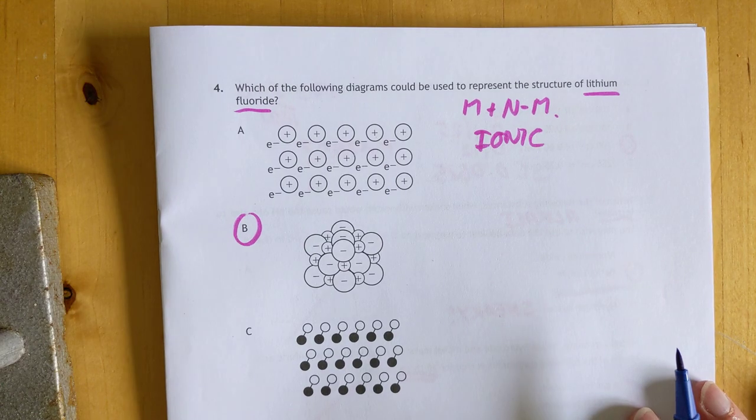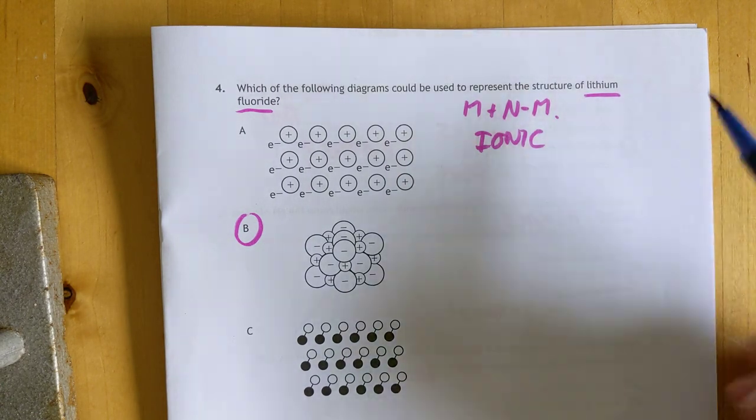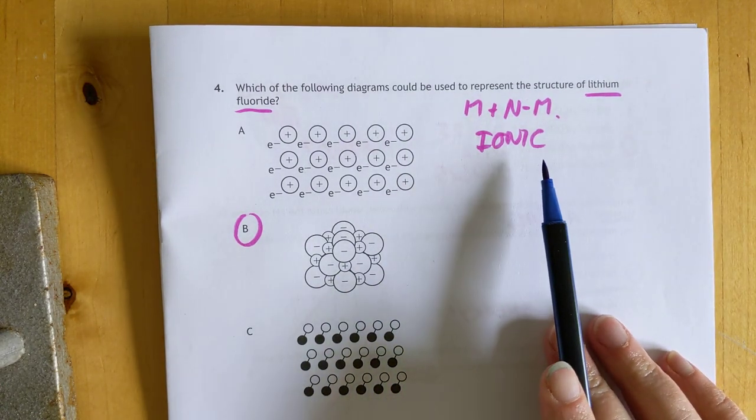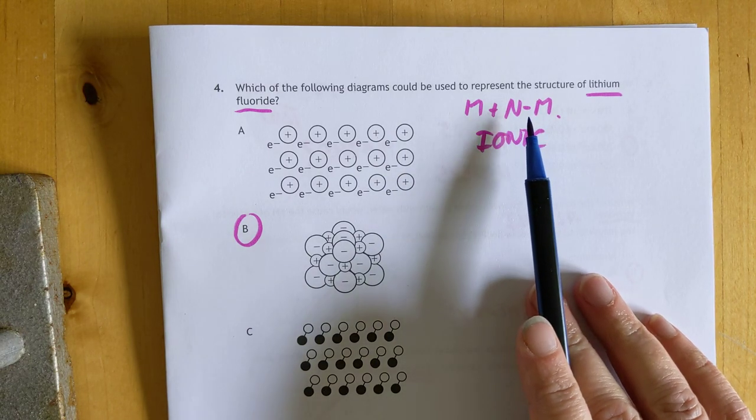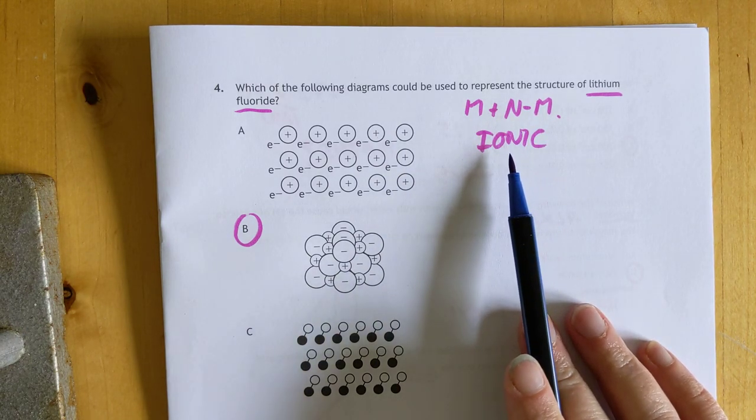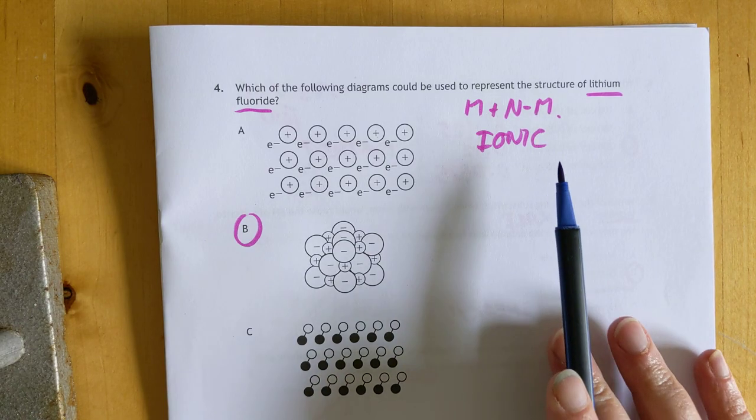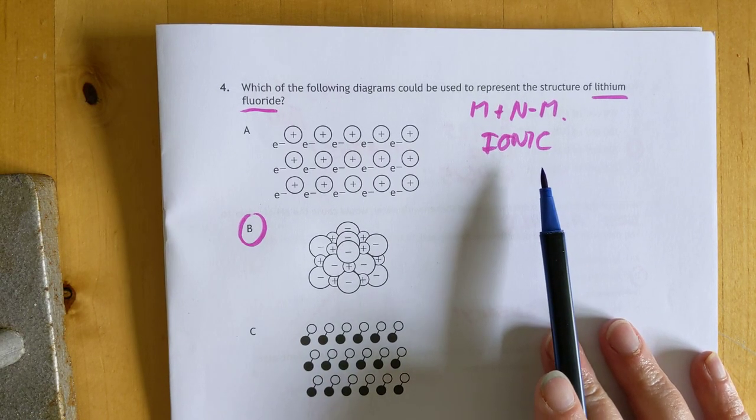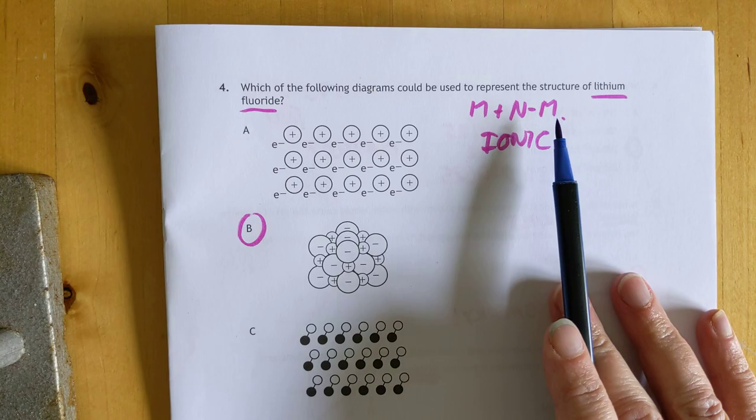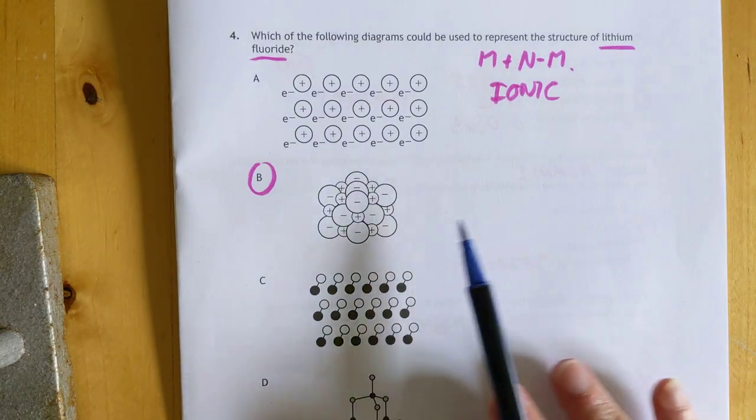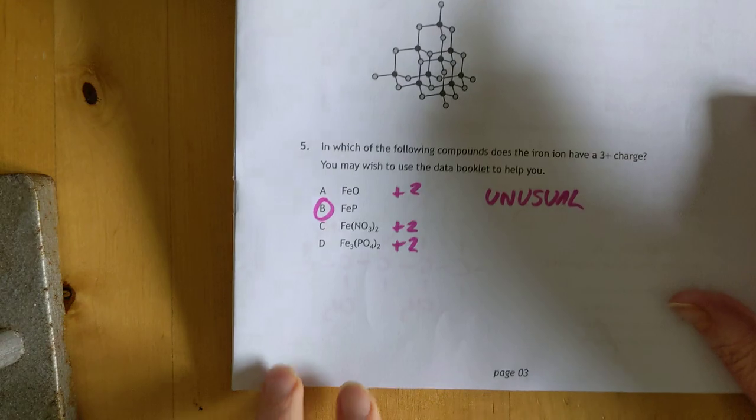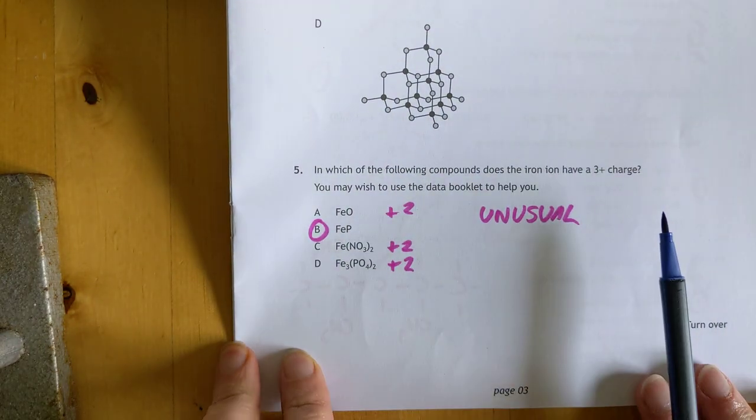Which of the following diagrams could be used to represent the structure of lithium fluoride? It's a metal and a non-metal, traditionally that's ionic. So therefore I think we'll go with structure B.